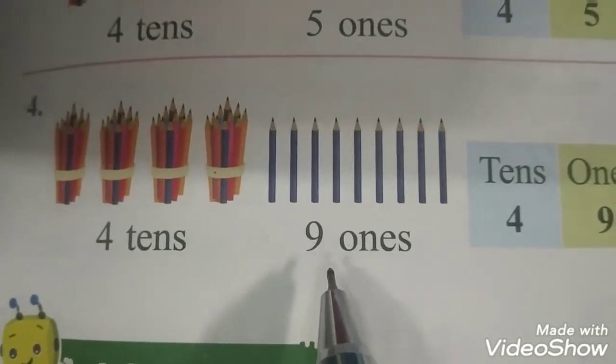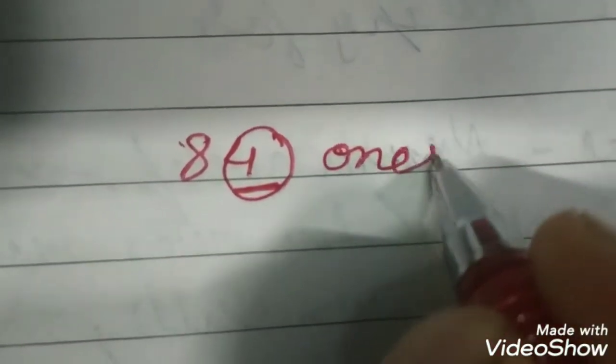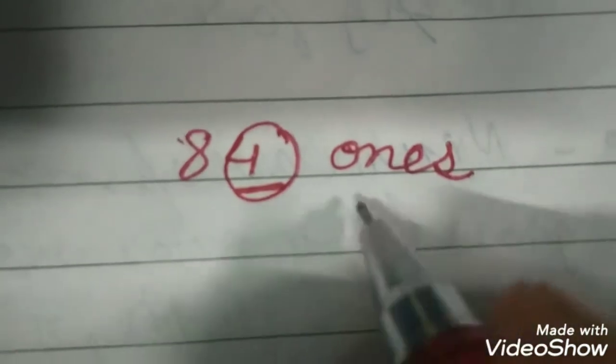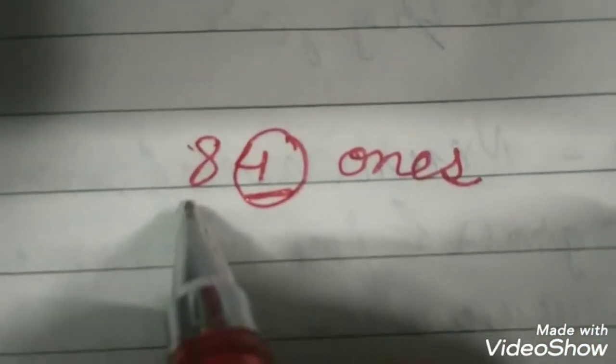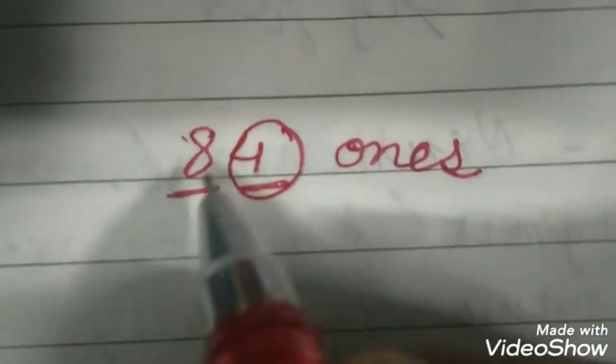So better always remember in any number. Suppose I write here 84. This is the number I am writing. In any number, the digit on the right hand side, this digit 4, this is the ones. These are the ones. And the digit over here on the left hand side, like here it is 8, these are the tens.